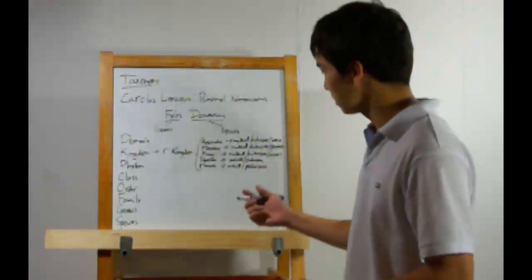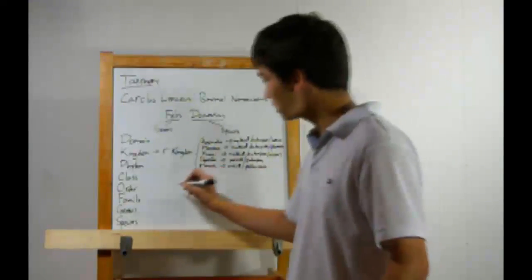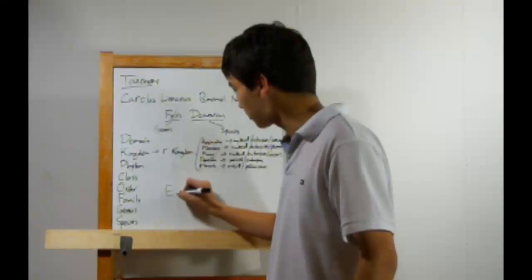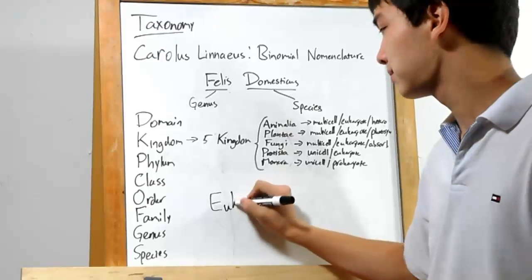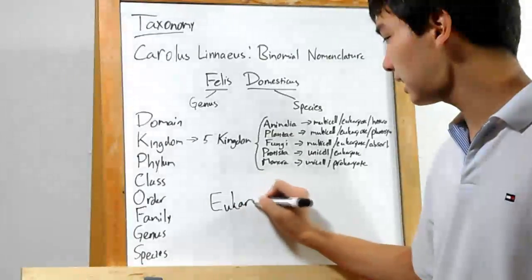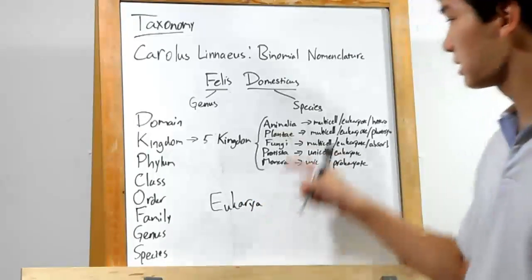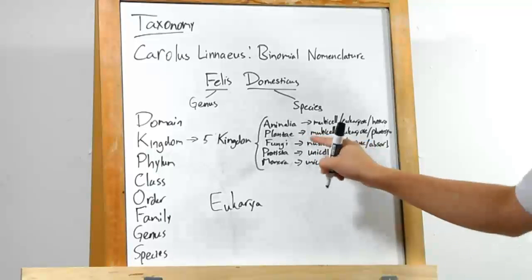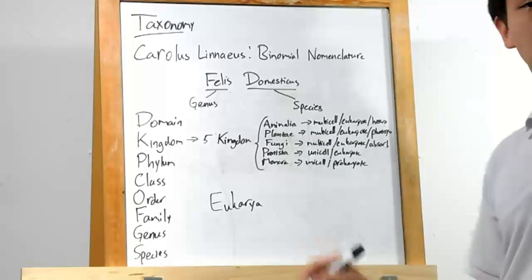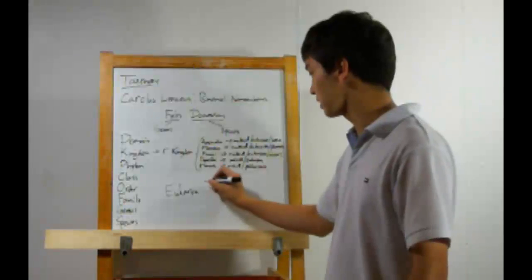And this is how it works. The three domains are: first off, Eukarya — this contains anything that's a eukaryote. In other words, Animalia, Plantae, Fungi, and Protista all fall under Eukarya.